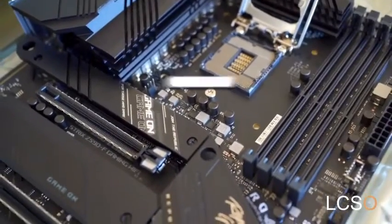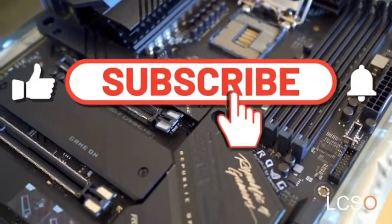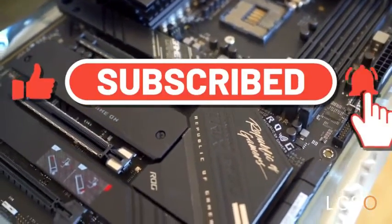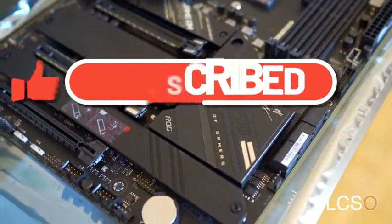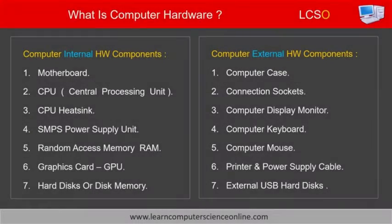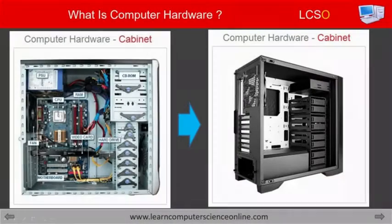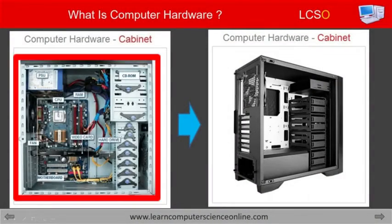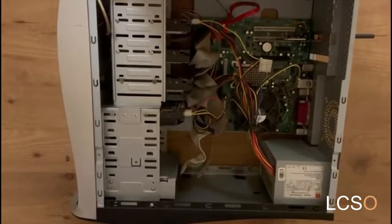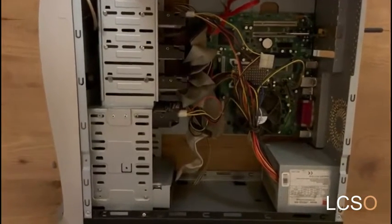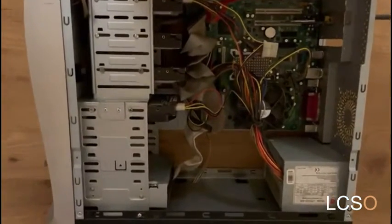Computer hardware includes various mechanical, electrical, and electronics components used to build the computer system. The hardware components can be of two types. The first type are placed inside the computer case, also called a computer cabinet.